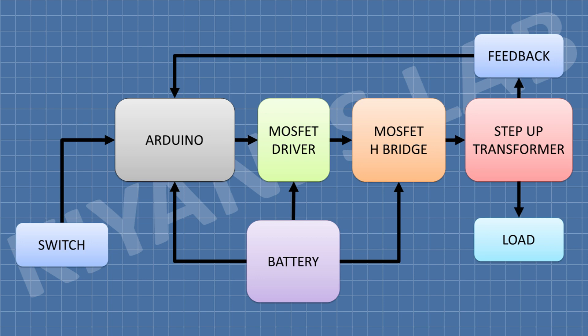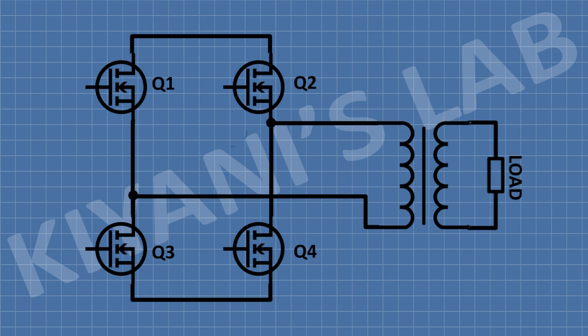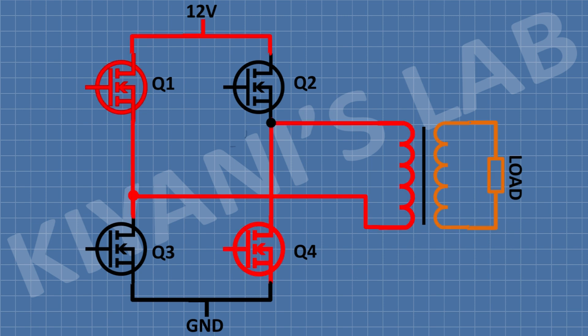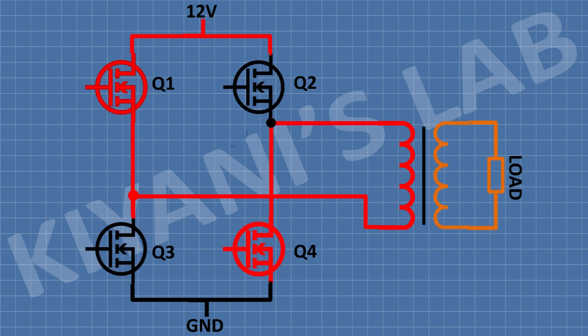A switch is used to turn the inverter on and off. Four MOSFETs Q1, Q2, Q3, and Q4 are connected in H-bridge configuration. A step-up transformer is connected at the output. 12V supply is given to the H-bridge. When we turn on the system, MOSFETs Q1 and Q4 turn on and current flows through them and through the primary winding of the transformer. Then Q1 and Q4 turn off, Q2 and Q3 turn on, and current flows in the opposite direction through the primary winding. Then the sequence repeats again and again.